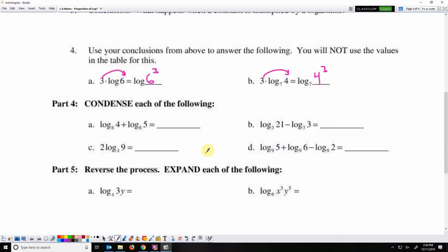So condense the following. We've got log base 8 of 4 plus log base 8 of 5. That is log base 8 of 4 times 5, which is 20. Log base 8 of 21 minus log base 8 of 3 is log base 8 of 21 divided by 3, which is 7.